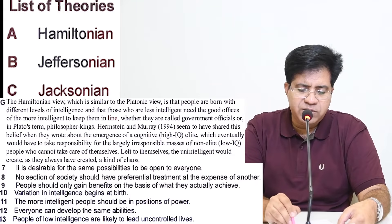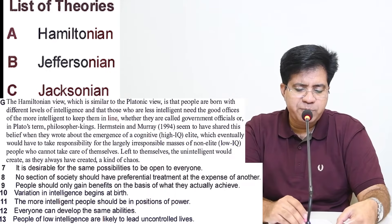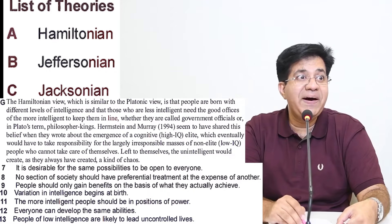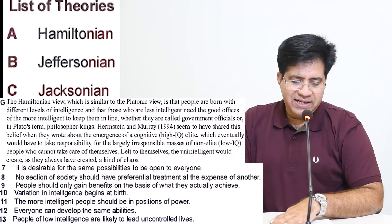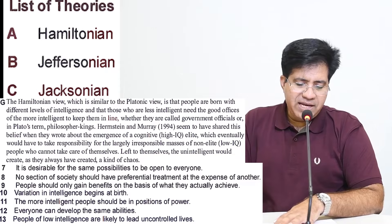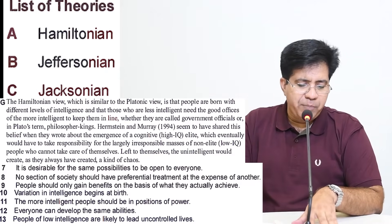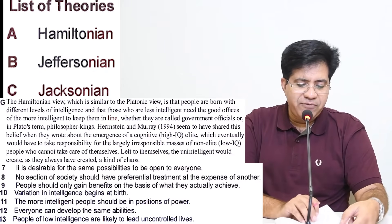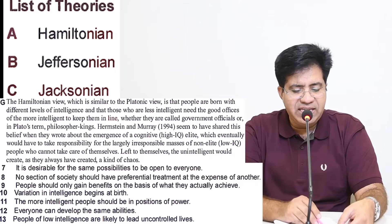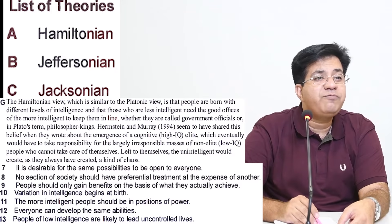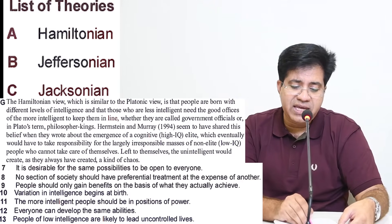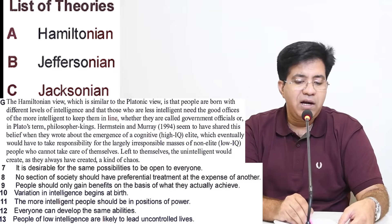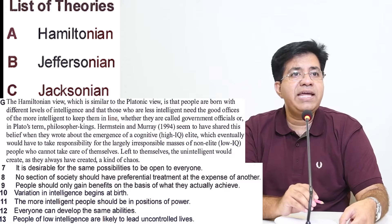Question 10: 'Variation in intelligence begins at birth' — the Hamiltonian view says 'people are born with different levels of intelligence.' Variation in intelligence = different levels. Begins at birth = people are born. So question 10 answer is A (Hamiltonian). Cross out question 10 — you will not read it again.